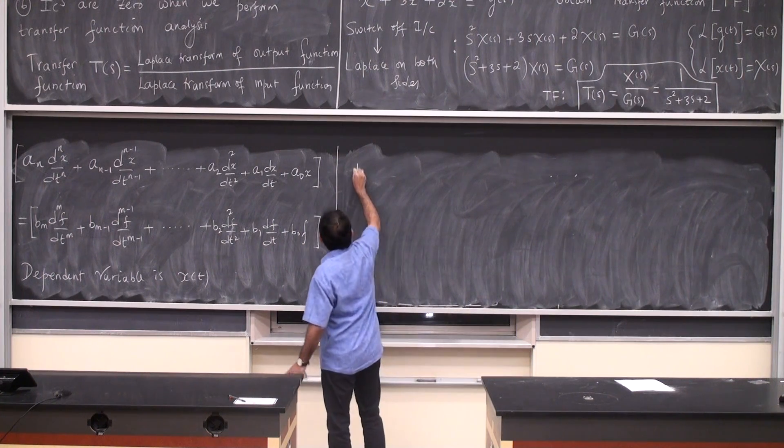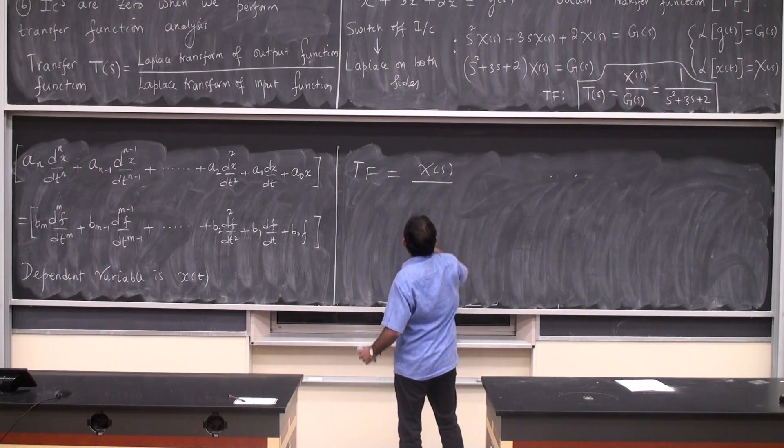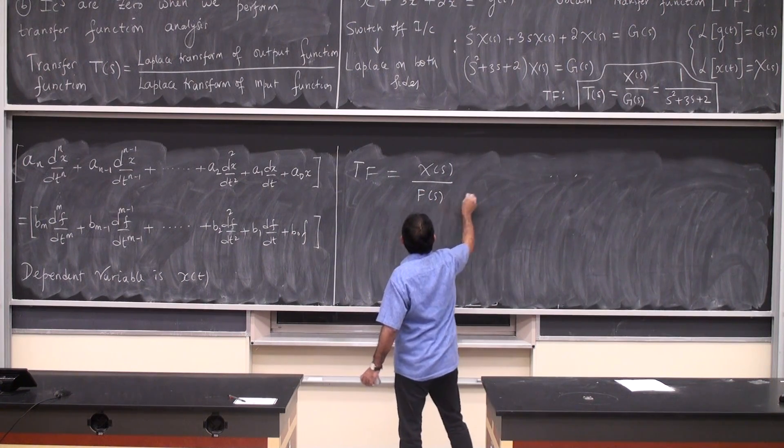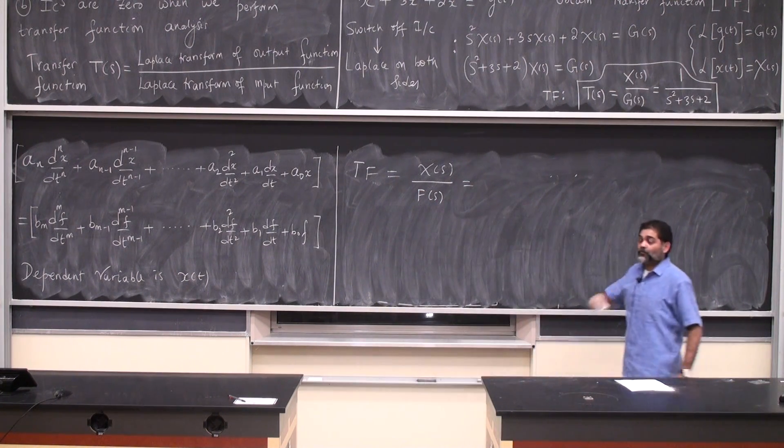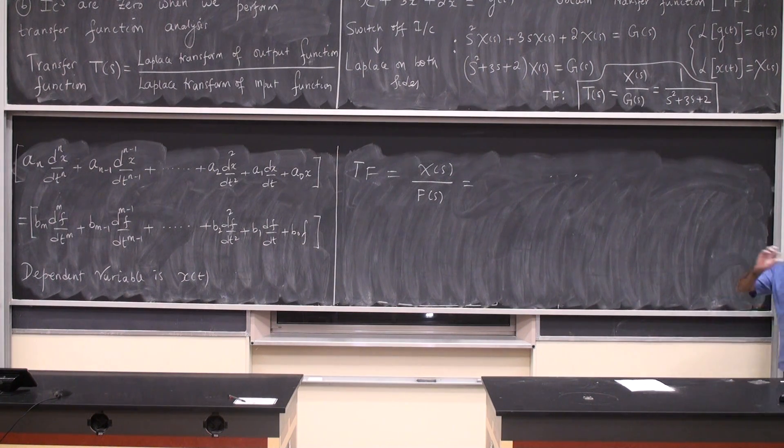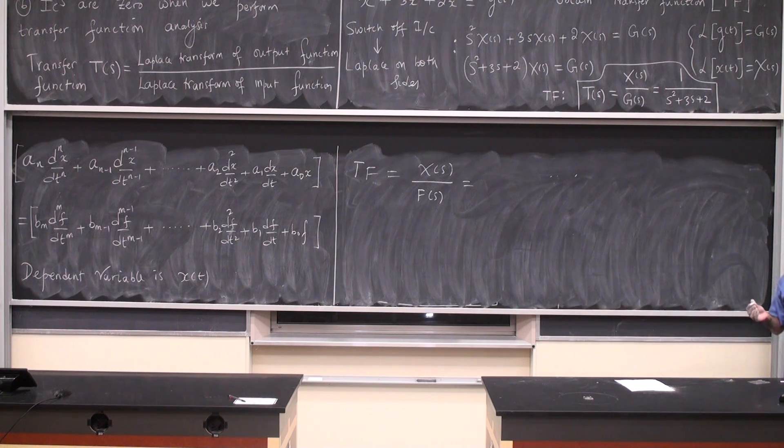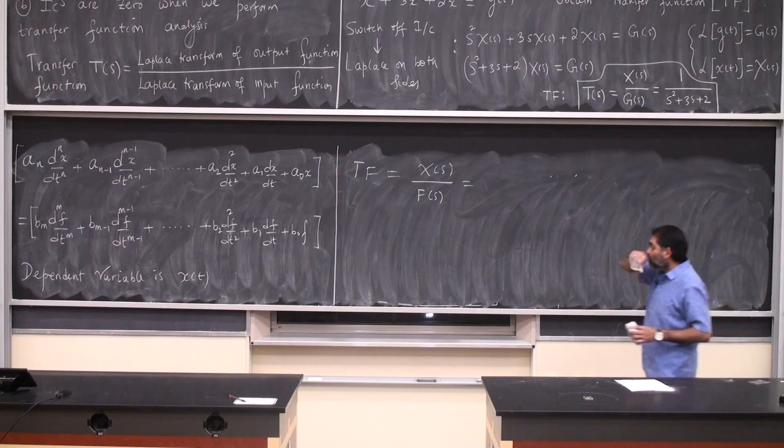So transfer function is X(s) by F(s). We just take the Laplace transform of all the terms on the left hand side, all the terms on the right hand side, take the left hand side on the top, right hand side on the bottom. That's what we've been doing.